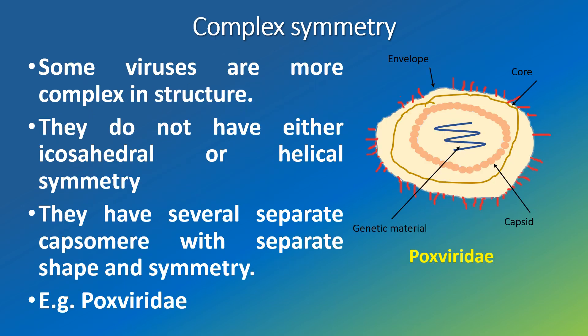Complex symmetry: some viruses are more complex in structure. They do not have either icosahedral or helical symmetry. They have several separate capsomeres with separate shape and symmetry — for example, poxviridae.